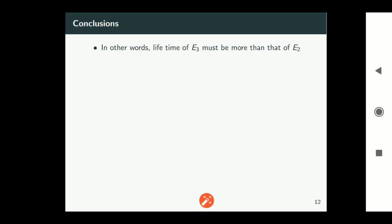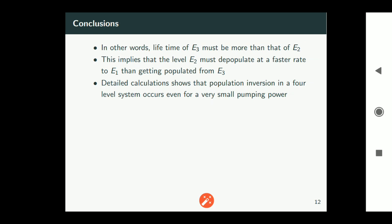Conclusion. So if lifetime of e3 is more than e2 then it implies that e2 must depopulate at a faster rate than e3. So that implies finally creation of population difference between the two levels. And detailed calculation shows that population inversion in a four level system occurs even for a very small pumping power.